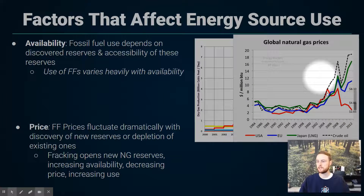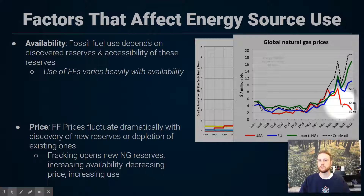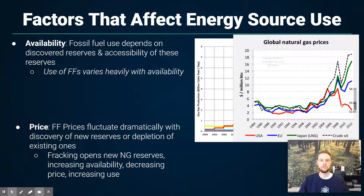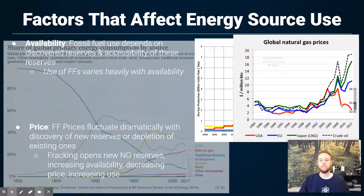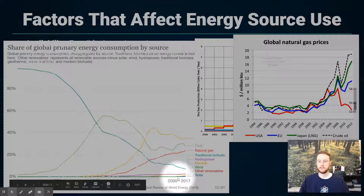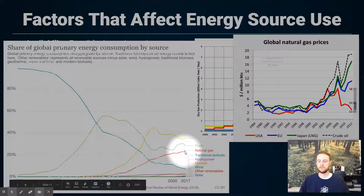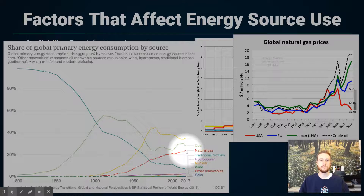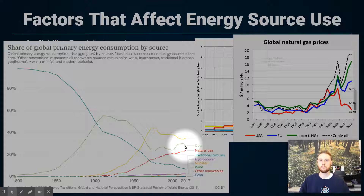Looking at U.S. natural gas prices around 2010, they went down substantially due to the explosion in fracking and production. When the price of a fuel drops dramatically, its use goes way up — natural gas use increased significantly. Meanwhile, coal started to decline a bit because more energy production was shifting to natural gas.